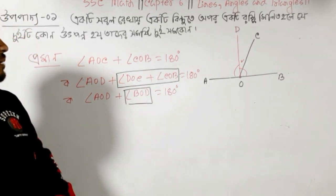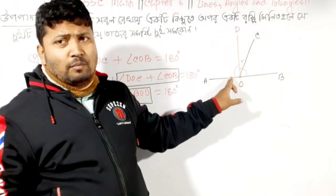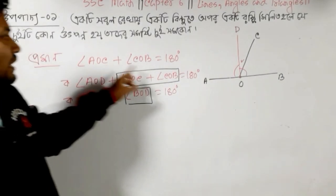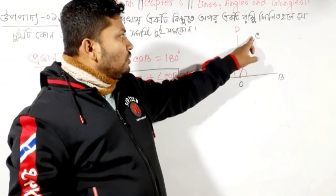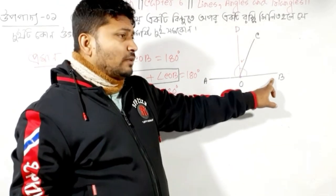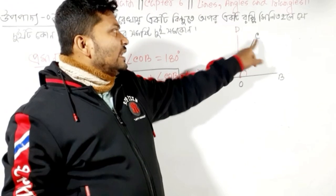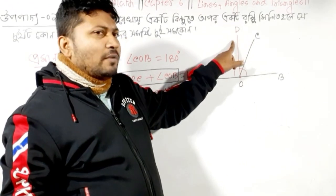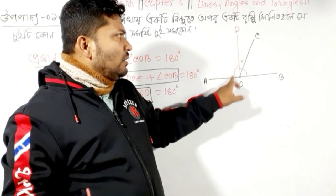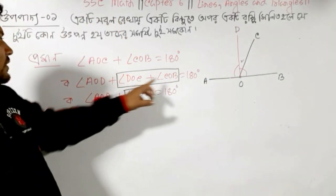The problem is A, B, O, D. The problem is A, O, C, and C, O, B. The problem is A, O, C, O, D. The problem is A, O, D, or C. The problem is 180.